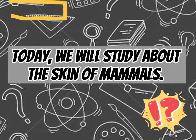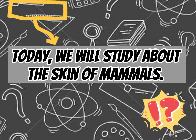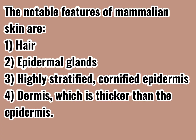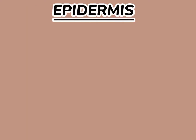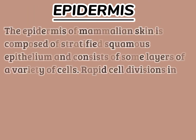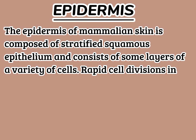Today we will study about the skin of mammals. The notable features of mammalian skin are: 1) hair, 2) epidermal glands, 3) highly stratified cornified epidermis, and 4) dermis which is thicker than the epidermis.